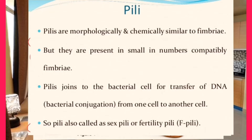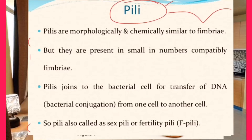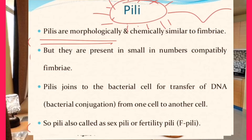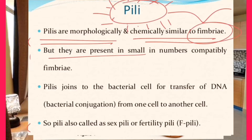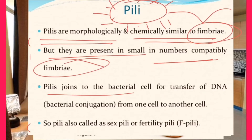Another surface structure found on bacterial cells is pili. There are three things found on the bacterial cell surface: flagella, fimbriae, and pili. Pili are smaller than fimbriae and fewer in number. They are called pili — morphologically and chemically similar to fimbriae but fewer in number and smaller in size.